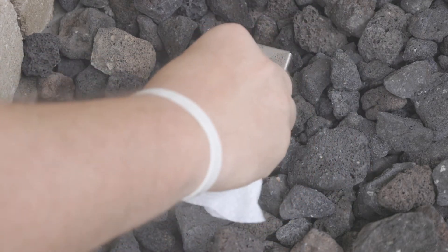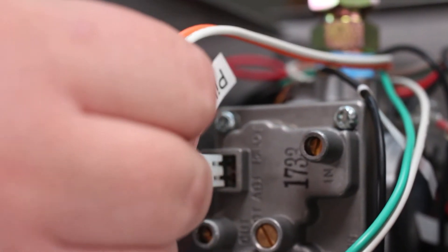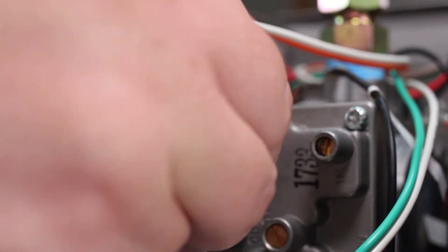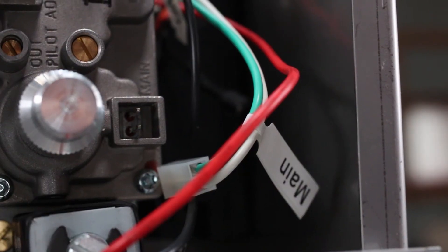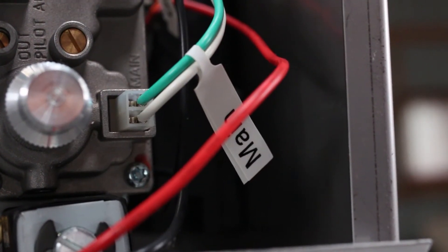Ensure orange white leads from the module are plugged into the pilot connection on the valve body. Ensure green white leads from module are plugged into the main connection on the valve body.